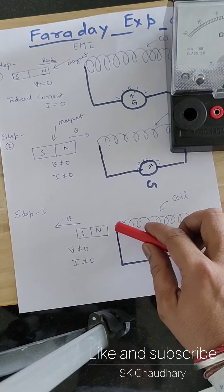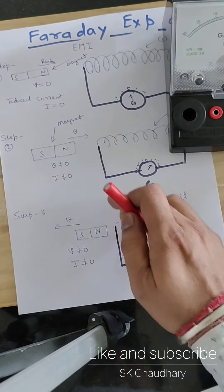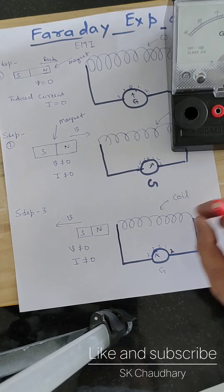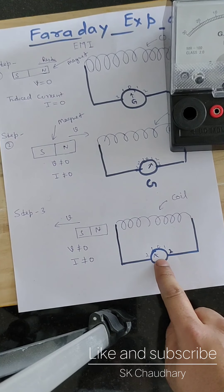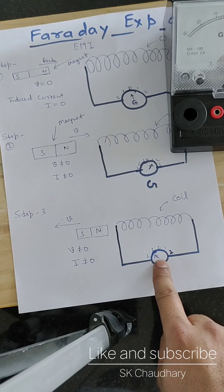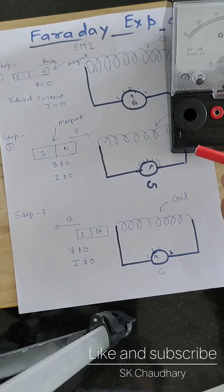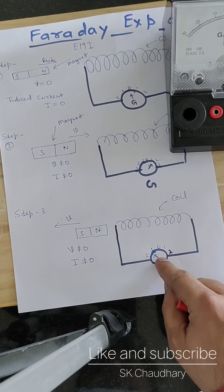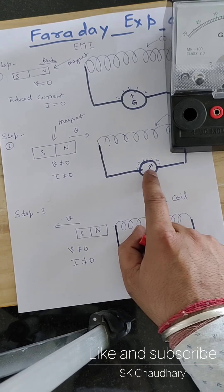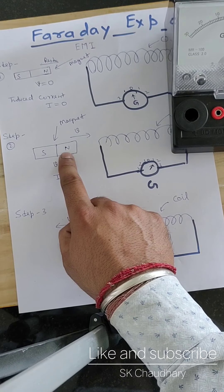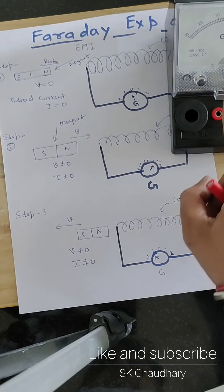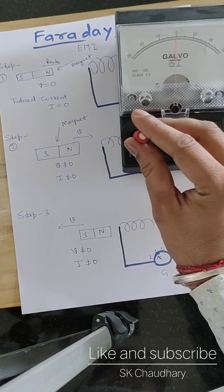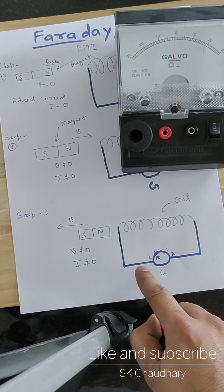If the direction of velocity is changed — initially the velocity is towards the coil and then the velocity is away from the coil — the direction of current will change inside the galvanometer. If the north pole is facing the coil and moving towards it, the direction will be towards the right inside the galvanometer. When the magnet comes out, the direction will be towards the left. If you put the south pole facing the coil, the direction will be opposite.